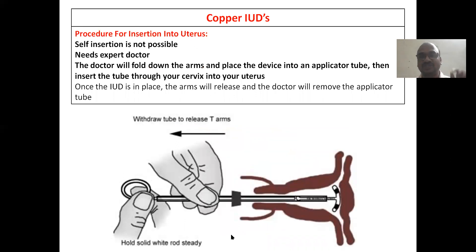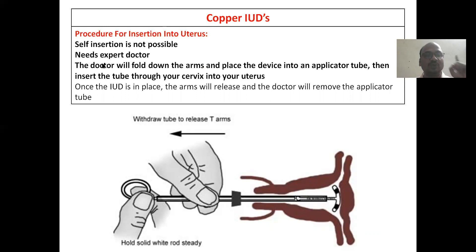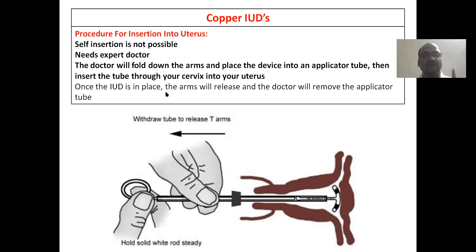The insertion process uses a small applicator. The doctor or expert will hold the applicator properly and place it. Self-insertion is not possible — it needs an expert. The doctor holds down the arms and places the device into the uterus. Once the IUD is placed, the arms are released and the doctor removes the applicator back out.